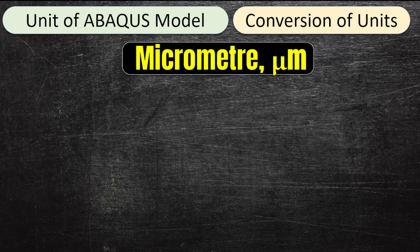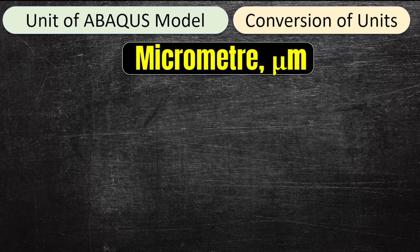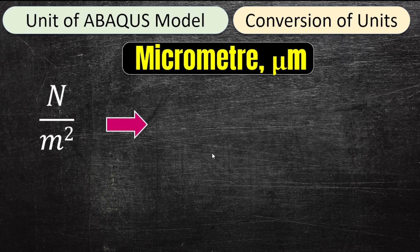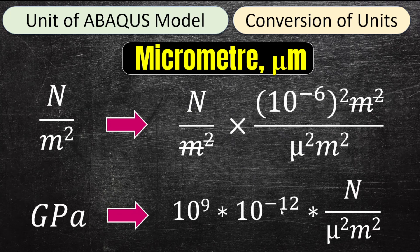For a micrometer system, we start from pascals (newtons per meter squared) and convert. Since 1 meter equals 10^6 micrometers, converting to newtons per micrometer squared means multiplying by 10^-12. So gigapascal values must be multiplied by 10^-12 to convert to newtons per micrometer squared. This is admittedly a bit awkward to interpret, but it is required for unit consistency. I'll offer practical advice on how to deal with this at the end of the video.